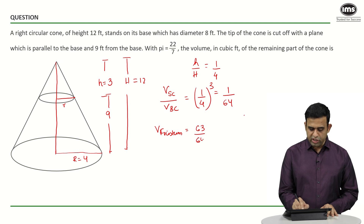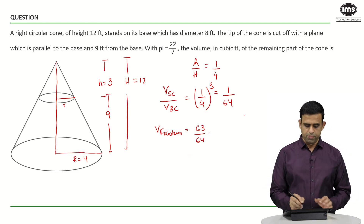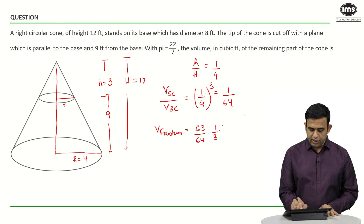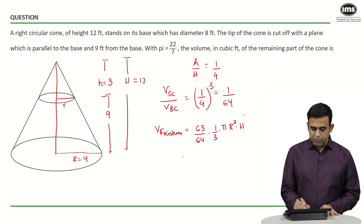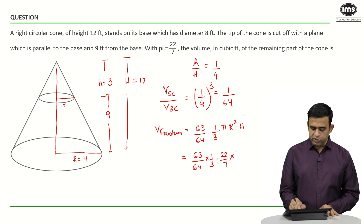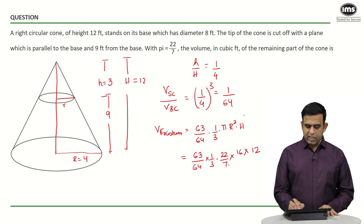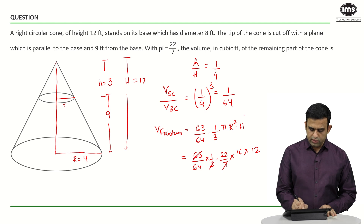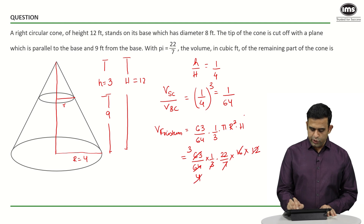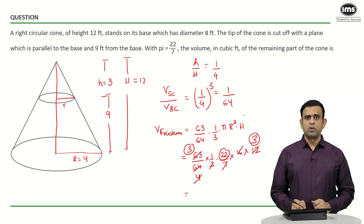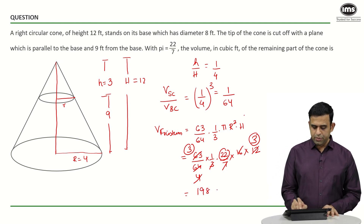So the volume of the frustum is 63 by 64 times the volume of the bigger cone, which is 1 by 3 pi capital R squared into capital H. Substituting: 63 by 64 into 1 by 3 into 22 by 7 into 4 squared into 12. This gives 16 times 12 equals 192; 7 times 3 is 21, and 21 times 3 is 63; 16 times 4 is 64. Simplifying, we get 3 times 22 times 3, which is 9 times 22, giving 198 cubic feet.